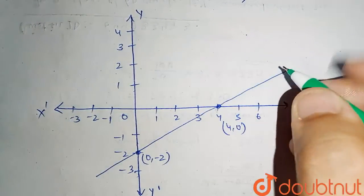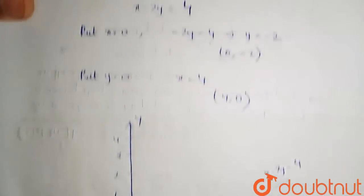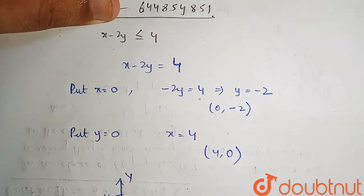So this is the line. And the equation of this is x-2y equals to 4. Now we have to plot for x-2y is less than equals to 4.